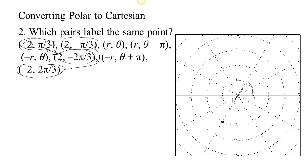Here's another example of the same location having multiple representations. With (2, −π/3), you're facing the direction −π/3 and taking two steps forward, landing at a location in the fourth quadrant. With (−2, 2π/3), you face 2π/3 — that's one π/3, two π/3 — into the second quadrant, but take two steps backwards. Stepping back from the second quadrant moves you to the same location in the fourth quadrant. These two very different-looking polar coordinates represent the same point.